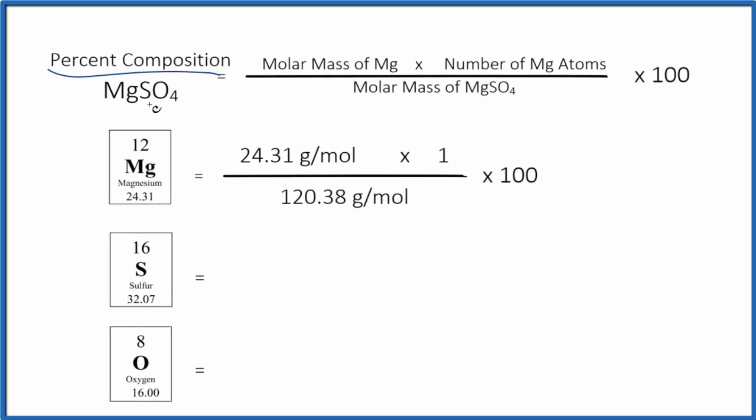Let's look at the percent composition of MgSO4, that's magnesium sulfate. When we find the percent composition, we're going to look at each element here. Let's start with magnesium.